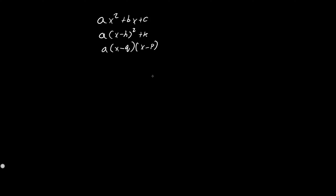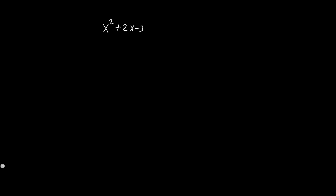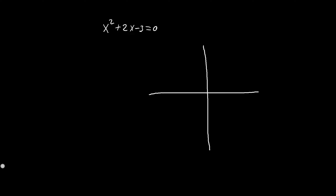Let's look at the general case first where we have x² + 2x - 3 = 0. Sometimes this is written as f(x) = 0, but most of the time when you're graphing it you also want to see what the solutions are, so that's why it's better to write it as equal to 0 since you're solving it in some sense. We're going to graph it by making a Cartesian graph and a table on the left side, labeling x and y for the values we'll plug into our equation.